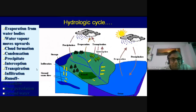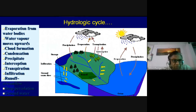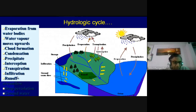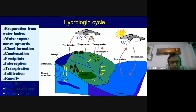We have covered the components of the hydrologic cycle: evaporation, water vapor movement upwards, cloud formation, condensation, precipitation, interception, infiltration, runoff, deep percolation, and groundwater. These are the main components of the hydrologic cycle.